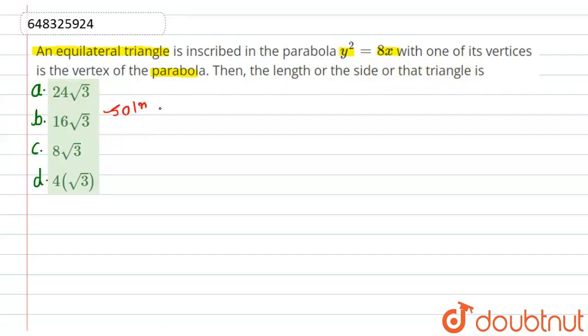Simply in this question what is given is an equilateral triangle which is inscribed in a parabola of equation y² = 8x with one of its vertex of the vertex of parabola. So we have to find the length of the triangle.